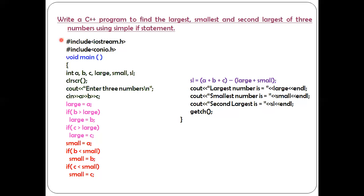The first two lines are header files. Hash include within the angular bracket iostream.h stands for input output stream header file. The second one, hash include within the angular bracket conio.h, stands for console input output header file.